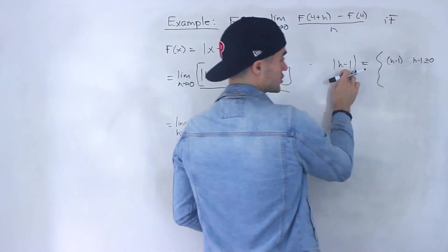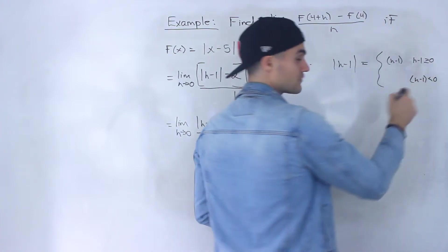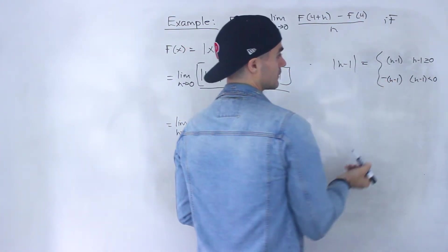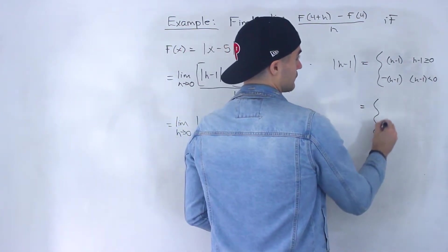Or if this expression, h-1, is less than 0, if it's negative, then we've got to multiply it by negative 1.